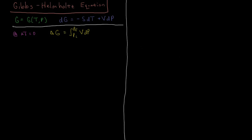So we're going to integrate that. For an ideal gas, we have PV equals NRT, or V equals NRT over P if we rearrange that. Let's also do this for the molar Gibbs energy. So delta G-bar, G-bar being the molar Gibbs energy, is just delta G divided by number of moles. We'll use the molar volume, V-bar, which is V divided by N, so it's RT over P.